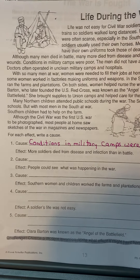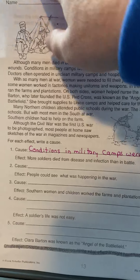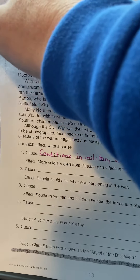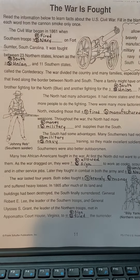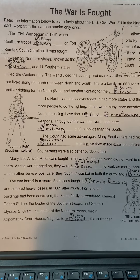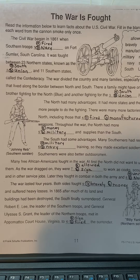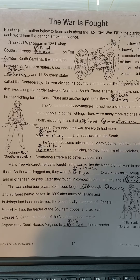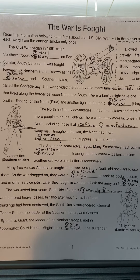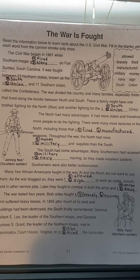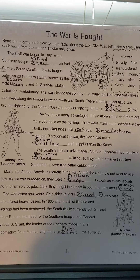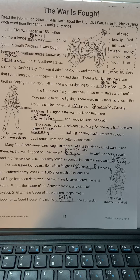The next sheet is a fill in the blank called 'War is Fought.' I'll read it to you and you will bubble in or circle the correct answer. The Civil War began in 1861 when southern troops fired on Fort Sumter, South Carolina. It was fought between 23 northern states known as — A: South or B: Union — and 11 southern states called the Confederacy.